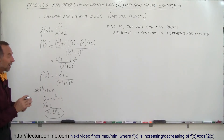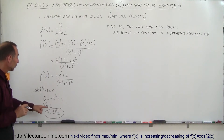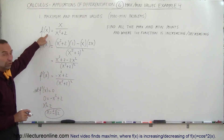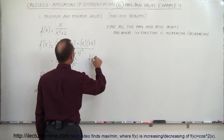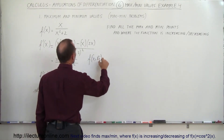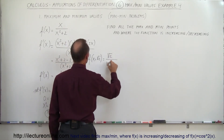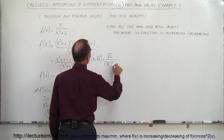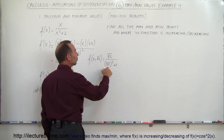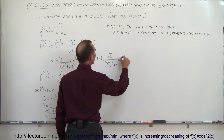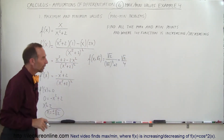What we need to do now is find the corresponding y values so we can locate those two points. We're going to plug these values back into the original function. So first, f of positive square root of 2 equals square root of 2 divided by square root of 2 quantity squared plus 2. The square root of 2 squared is 2, plus 2 is 4, so this becomes square root of 2 divided by 4, which is a number a little bit less than one half.